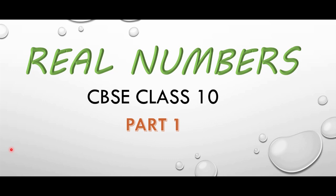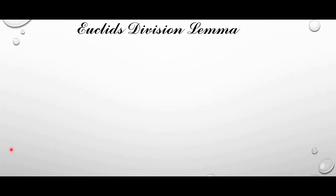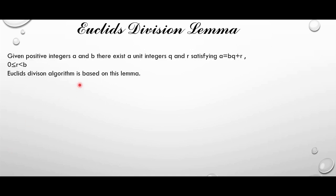Now we will begin with an important property known as Euclid's division lemma. Suppose if we have any two integers a and b, there exists a unique integer q and r satisfying a equal to bq plus r, where r ranges from 0 to b. This equation a equal to bq plus r is in the form of division algorithm, where dividend equal to divisor into quotient plus remainder.